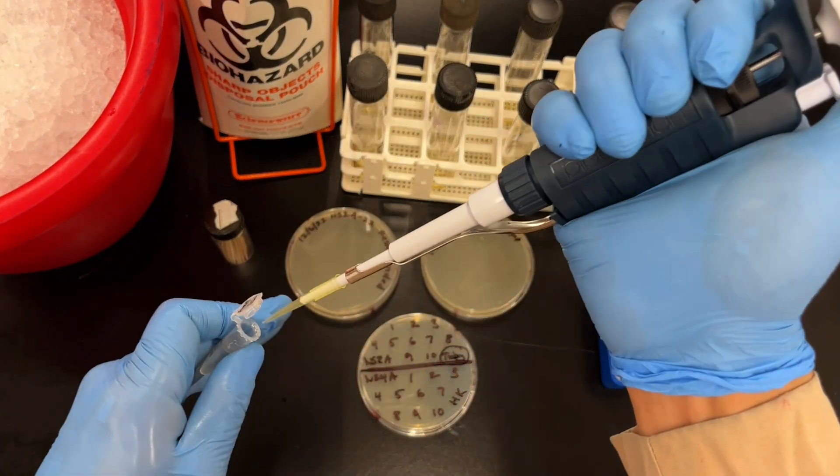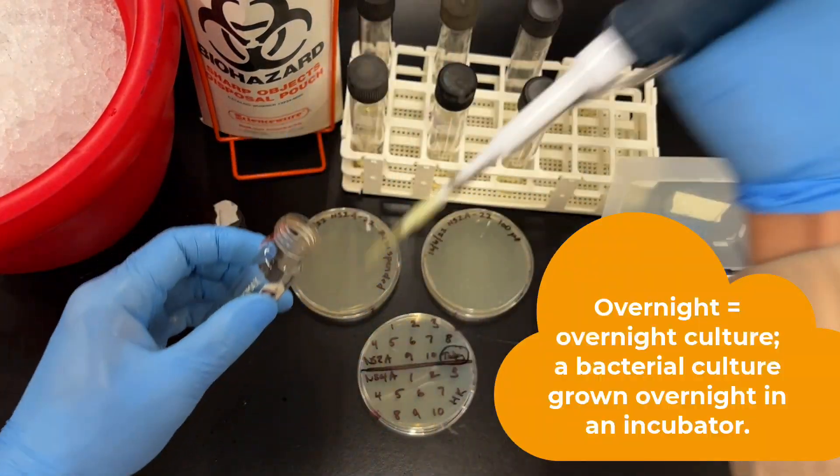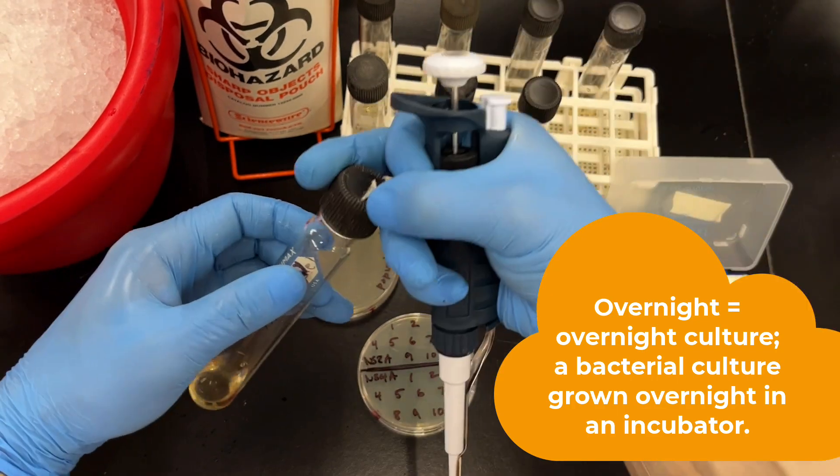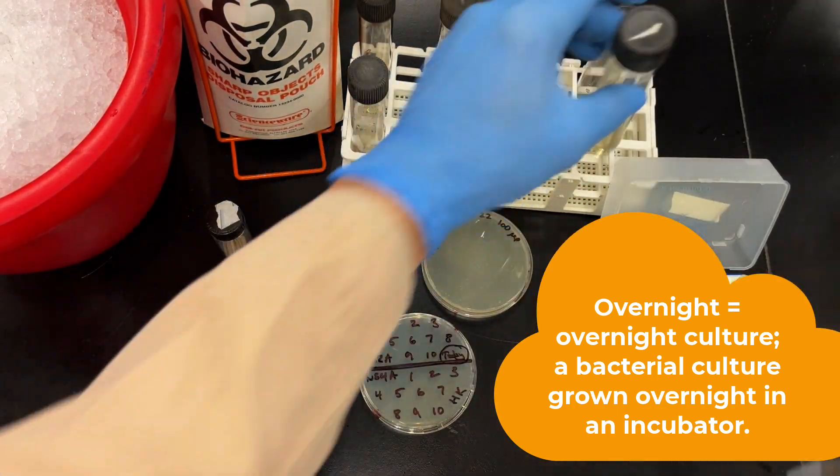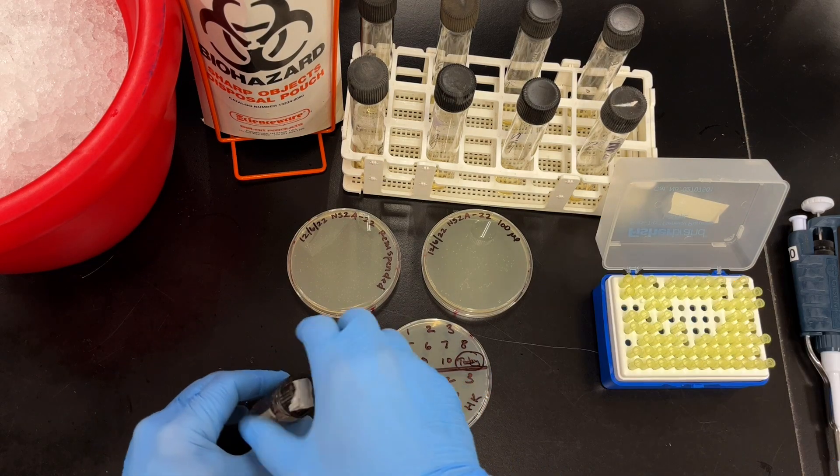Now, sometimes all you're going to do is pick clones. But other times, you're also going to want to start an overnight for a plasmid prep the next day. So I have a bunch of tubes all pre-labeled. Add the appropriate amount of antibiotic to each tube, and we're good to go. So I already added in the seven others.